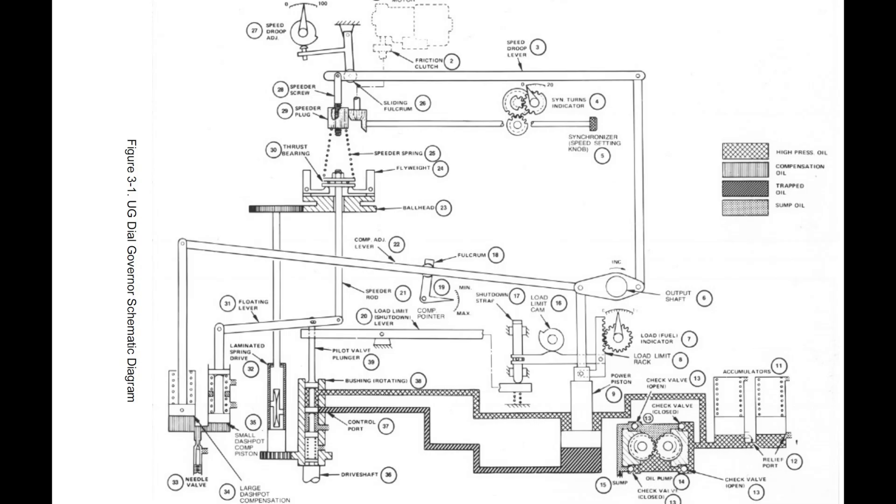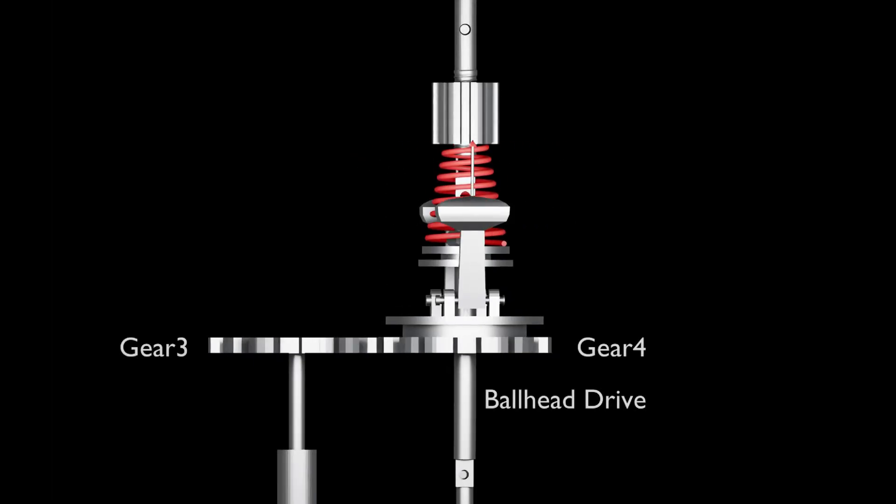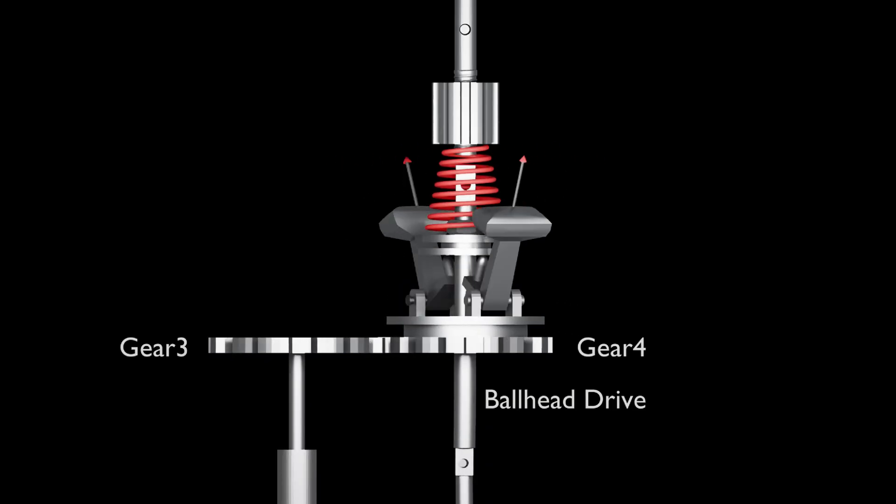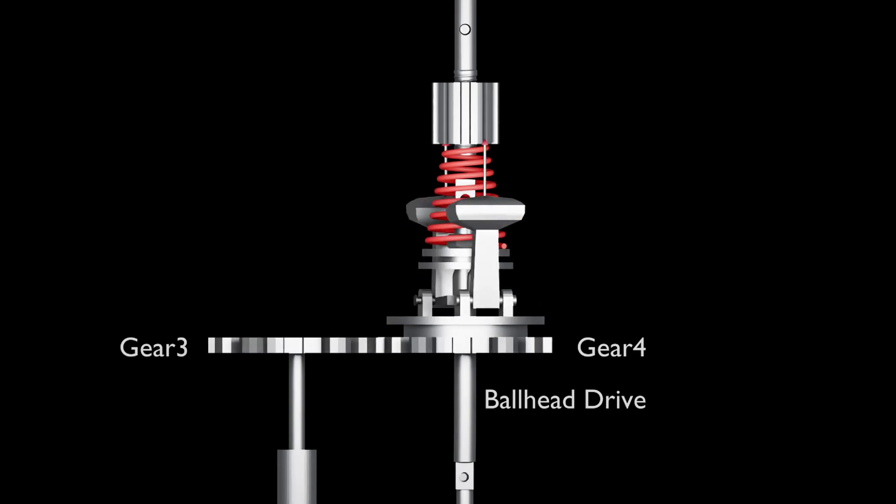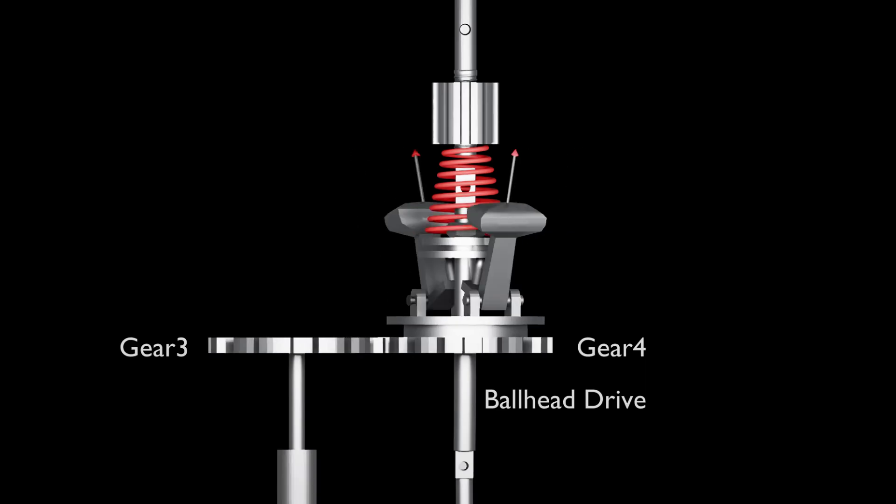Number 1. Speed Sensing Element. These are like the eyes of the governor, always monitoring the engine's speed in real time. These are the starting point of all governor actions. The rotating ball weights are sensing engine speed by rotating at high speed themselves and the centrifugal force that they experience.